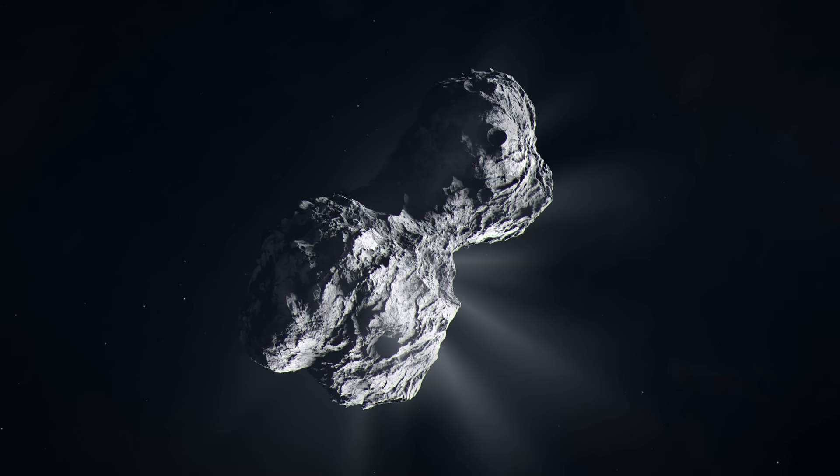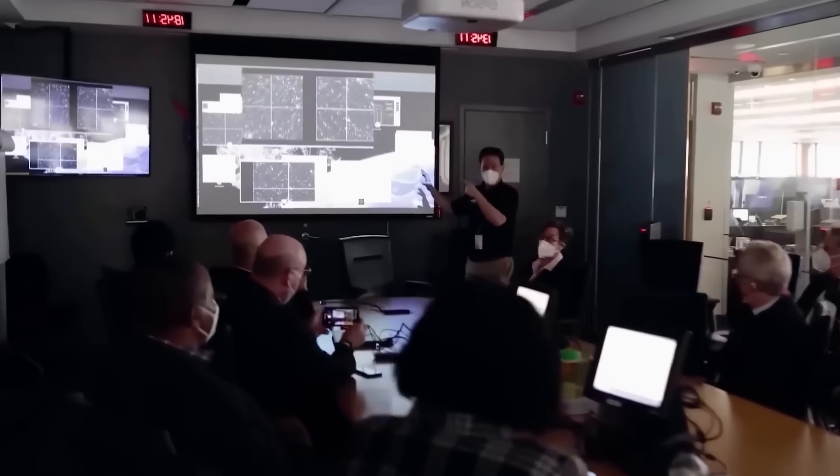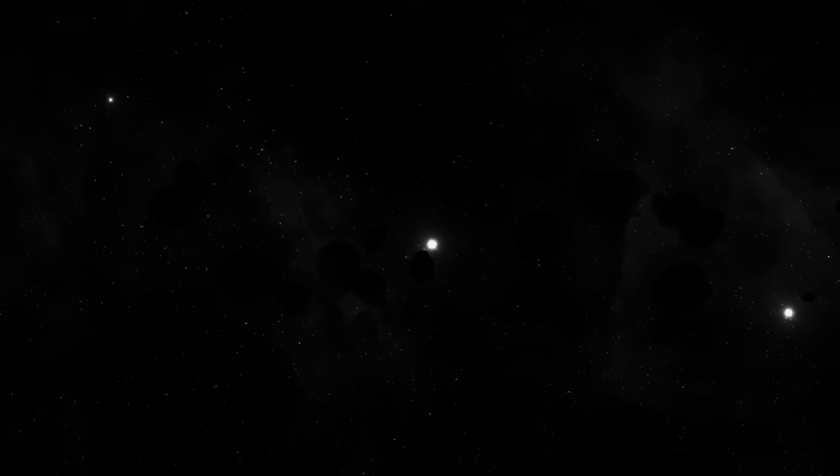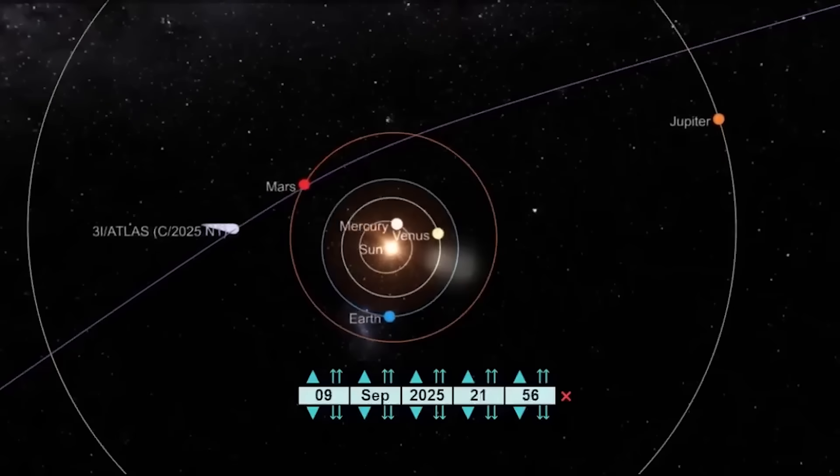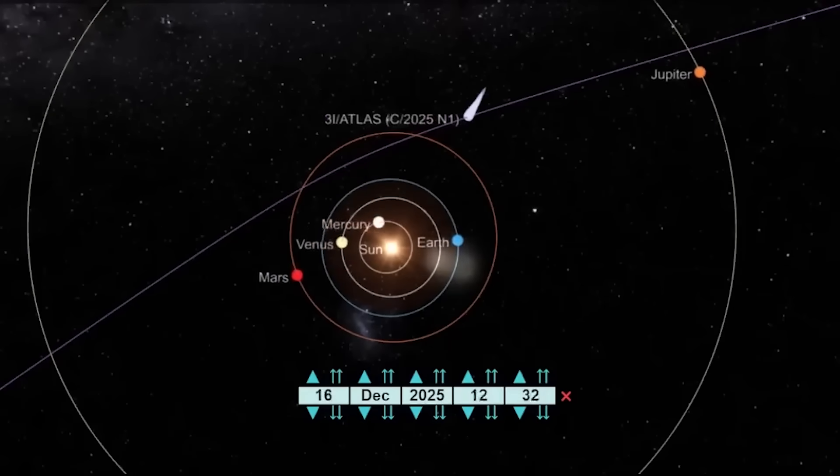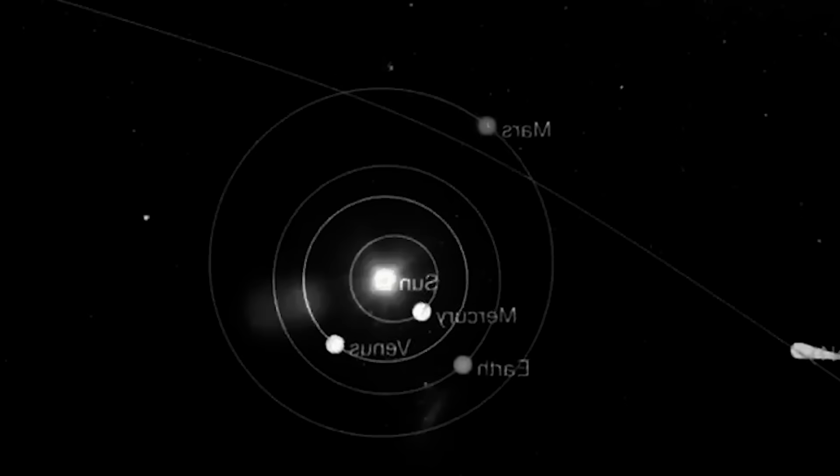Loeb warns that we may have made a catastrophic error in assuming this was a passive object. By studying it, by shining our light on it, we may have triggered its final protocol. The pieces breaking off from the main body aren't just debris, they are independently targeted projectiles. The deliberate trajectory towards Mars and Jupiter now looks less like a survey and more like a strategic move to get better targeting angles on the entire inner solar system.